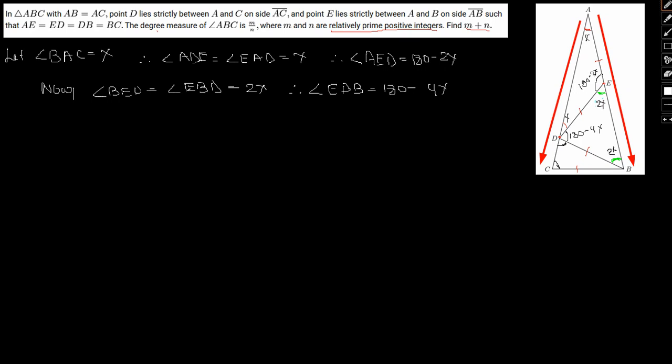And this one will be 180 minus 4X. So now, angle EAD equal to angle EBD equal to twice X. And therefore, angle ADB will be 180 minus 4X. Now, here, we can see that angle BDC plus angle EDB plus angle ADE they form 180 degrees, because straight line.